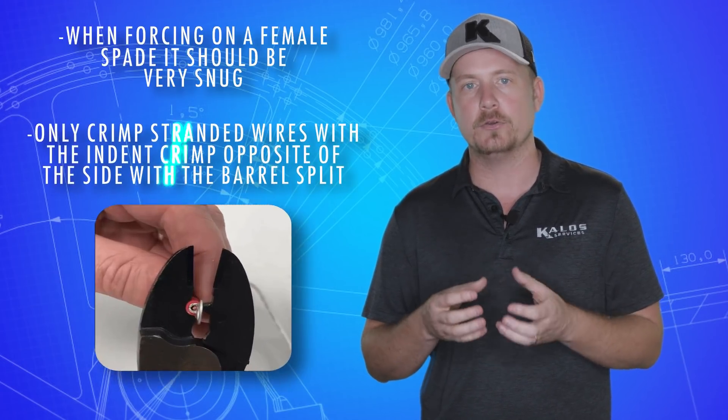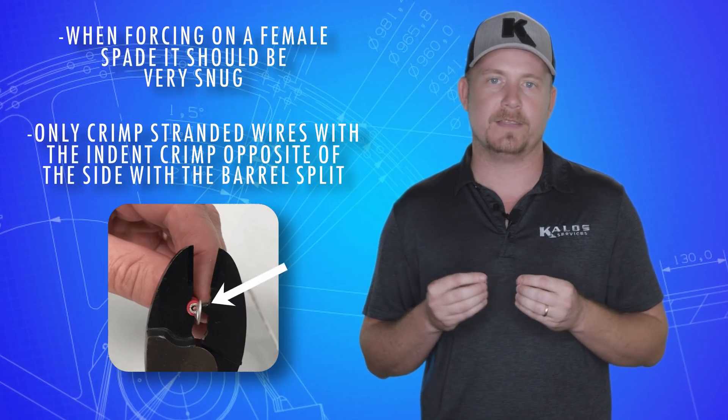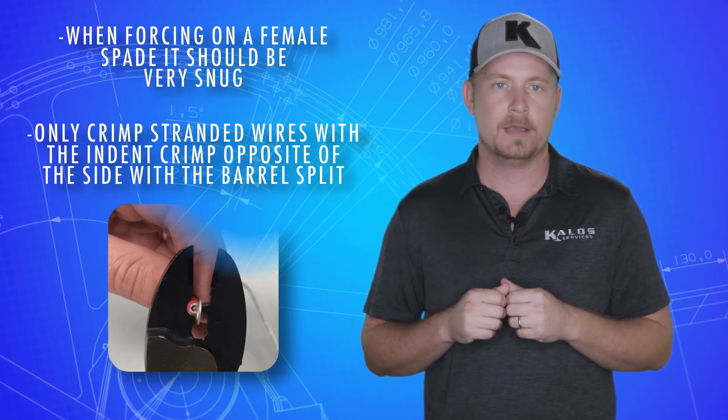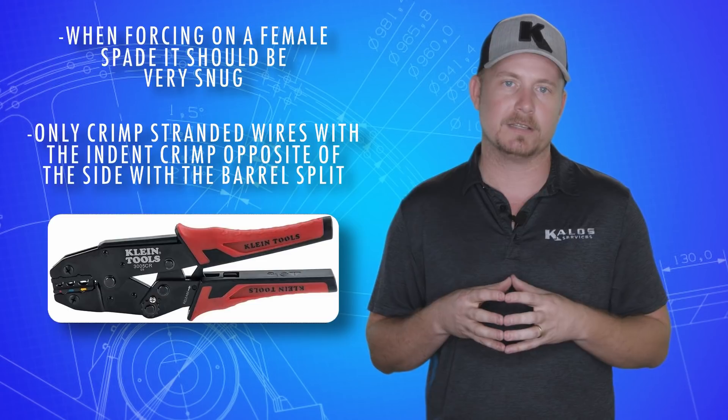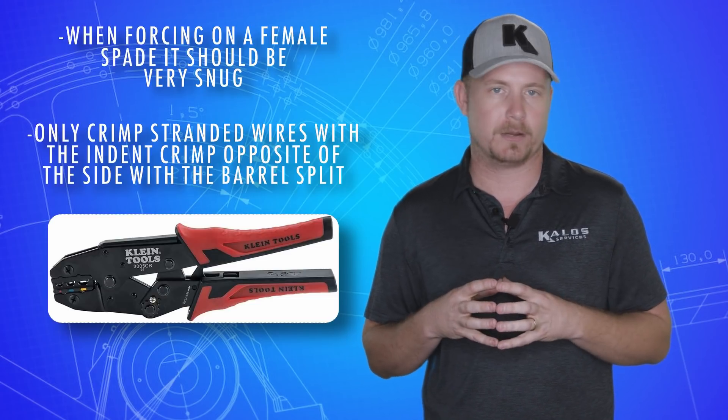Position the jaws so that the indent crimp is made on the side of the connector opposite the split in the barrel. Even better is to use a crimper specifically designed for insulated terminals that compresses the entire barrel. I prefer to use ratcheting crimpers.